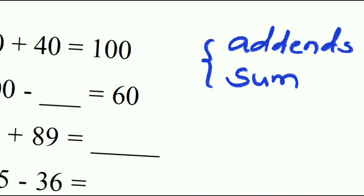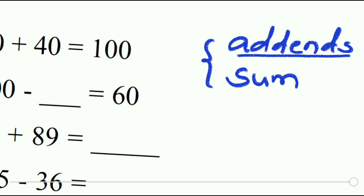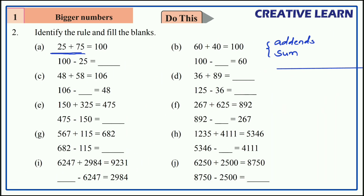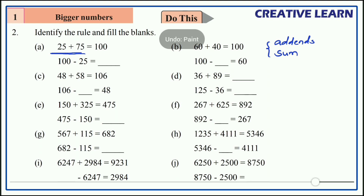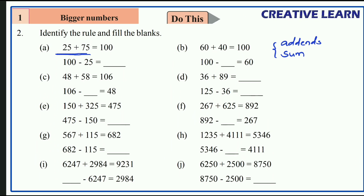The numbers which are adding are called addends, and the answer we get by adding the two numbers is called sum. Here, 25 and 75 are the two addends, and their sum is 100.